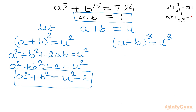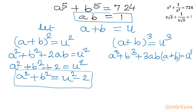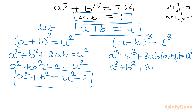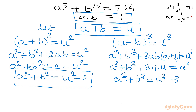Cubing: a³ + b³ + 3ab(a + b) = u³. Since ab = 1 and a + b = u, we get a³ + b³ + 3u = u³, so a³ + b³ = u³ − 3u.